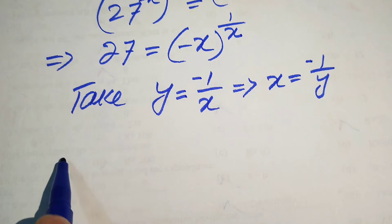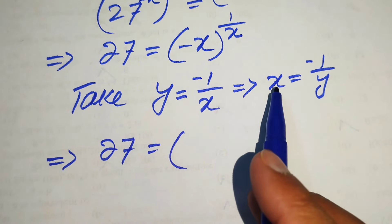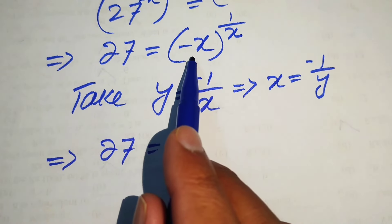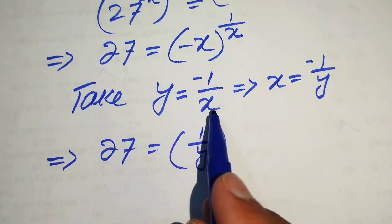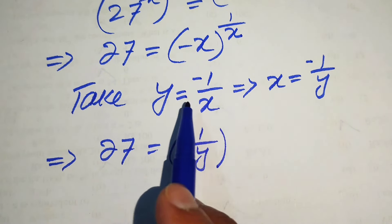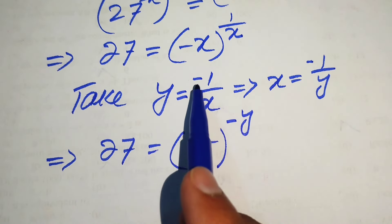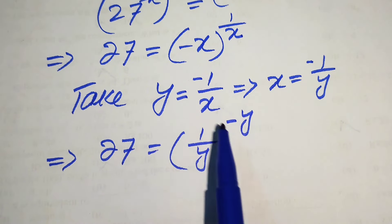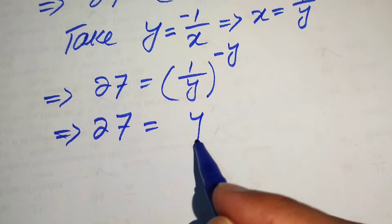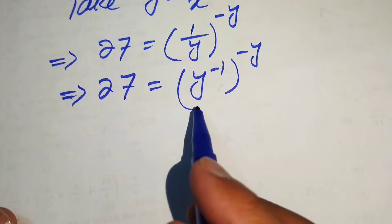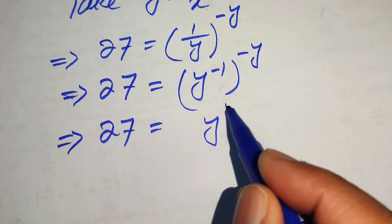This implies that 27 equals: since x equals minus 1 over y, minus x equals plus 1 over y. We substitute minus x equals 1 over y, and its exponent 1 over x equals minus y, because y equals minus 1 over x implies 1 over x equals minus y. Moving y to the exponent position gives y to the power of minus y, and using the exponential law we multiply the exponents to get y to the power of y.